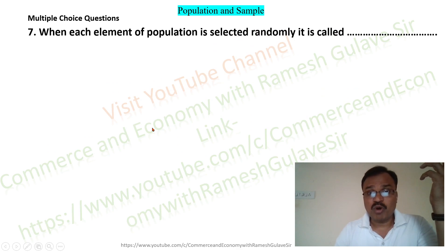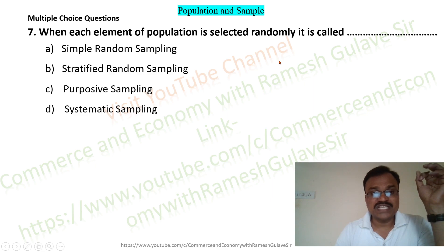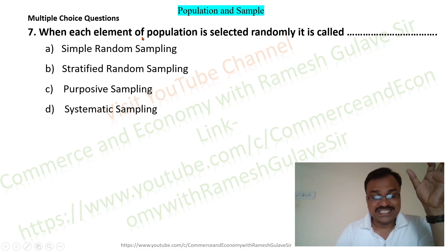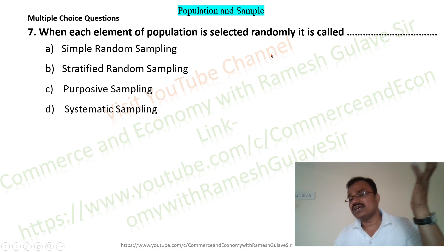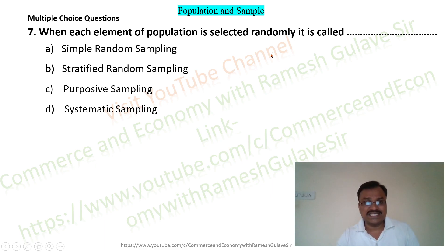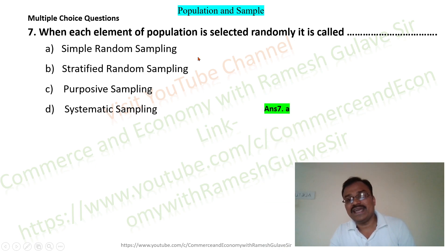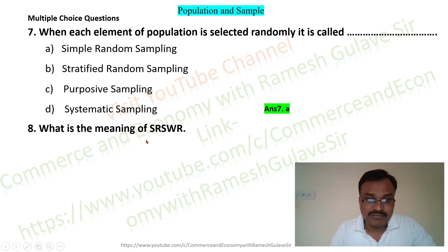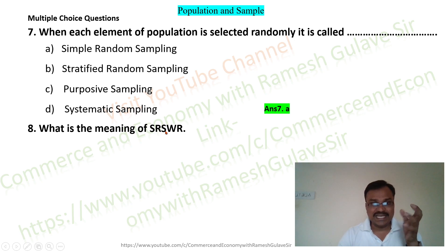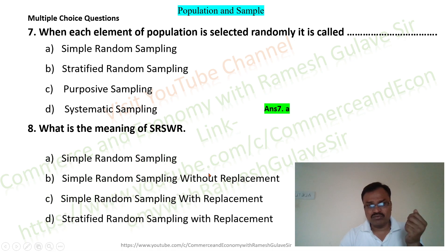The next question says: when each element of population is selected randomly, it is called dash. The options are: simple random sampling, stratified random sampling, purposive sampling, and systematic sampling. When selection is random, it is basically simple random sampling, so option A is the right answer. The next question asks about the meaning of SRSWR.